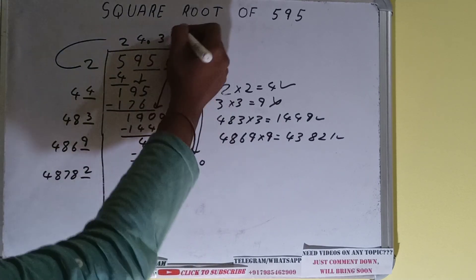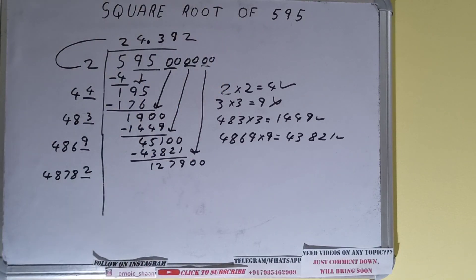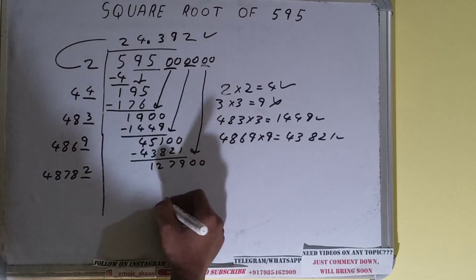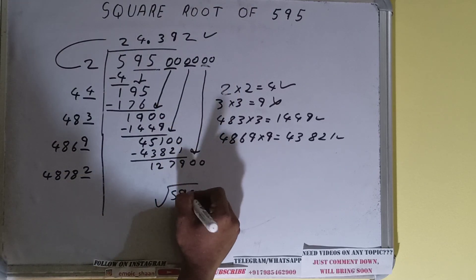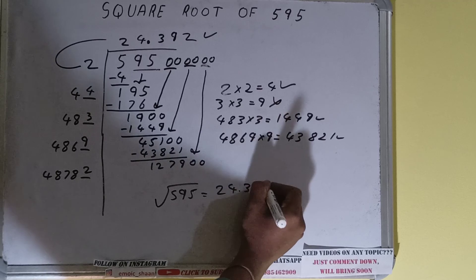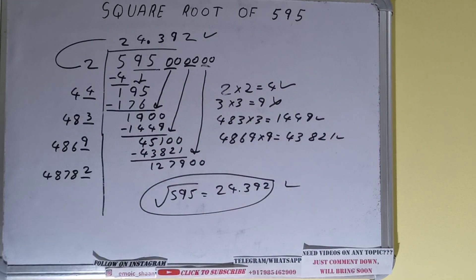Two here and two here, but we don't need to calculate further because we got the answer correct up to three decimal places. So the square root of 595 will be 24.392 — that would be the answer. If you found the video helpful please hit the like button, do consider subscribing, and thanks for watching.